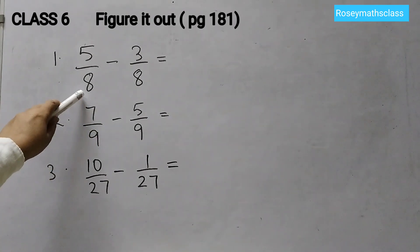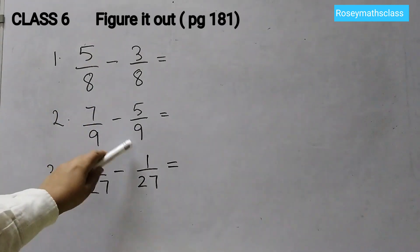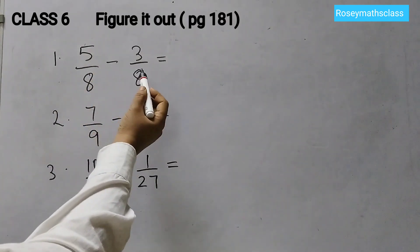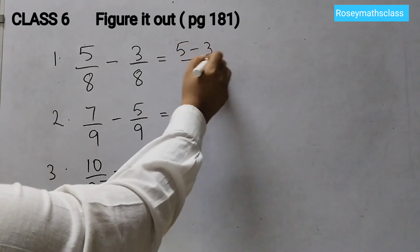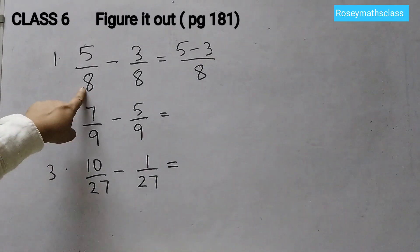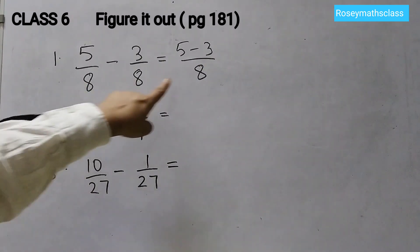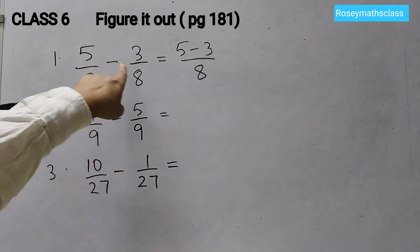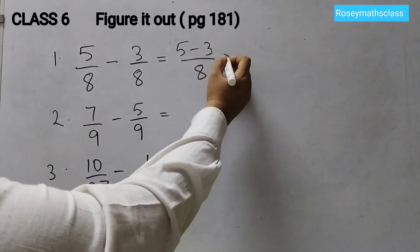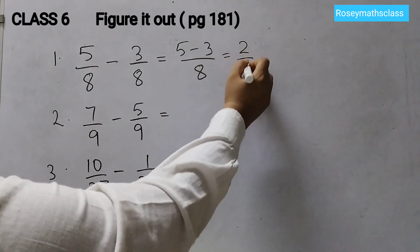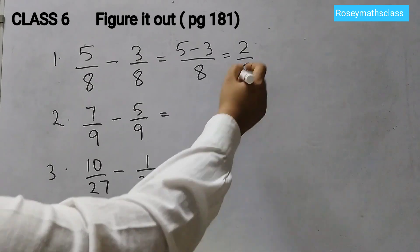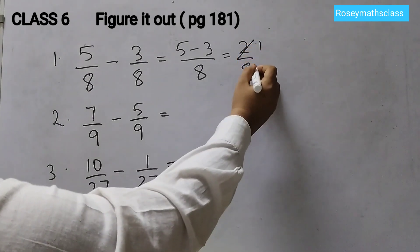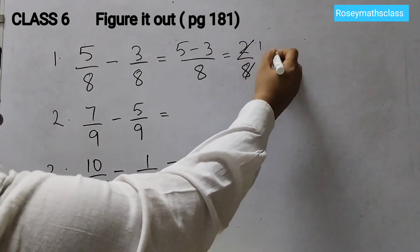So here we just need to subtract the numerators. 5 minus 3 over 8. Denominator remains as it is, 8, 8. Just subtract the numerators. 5 minus 3 is 2. 2 over 8. Now this can be further simplified. So 2 ones are 2, 2 fours are 8. This is called the lowest form.